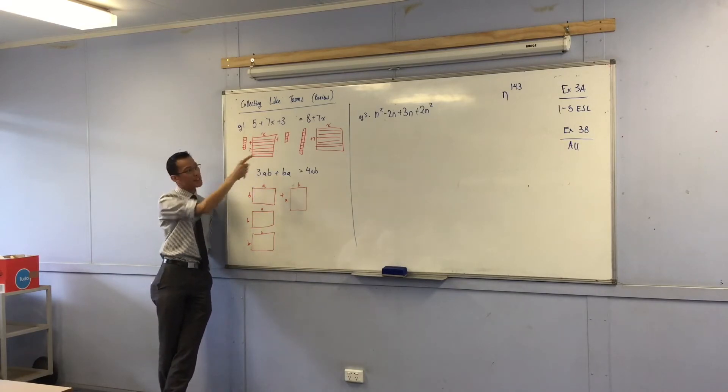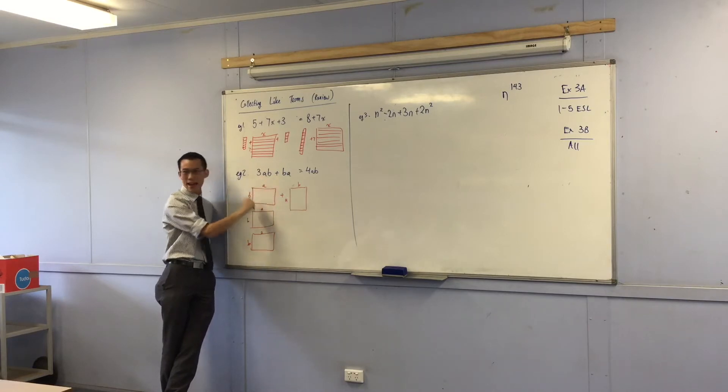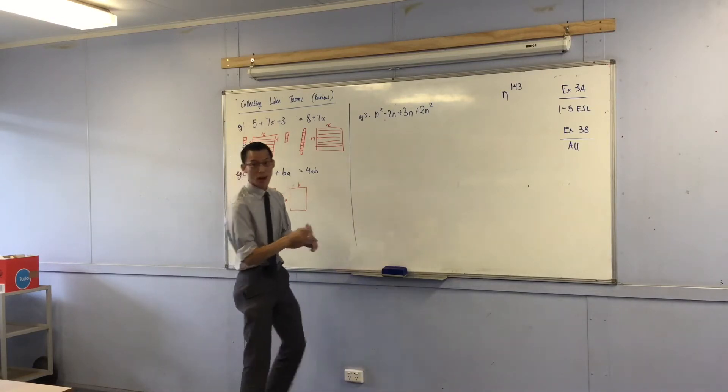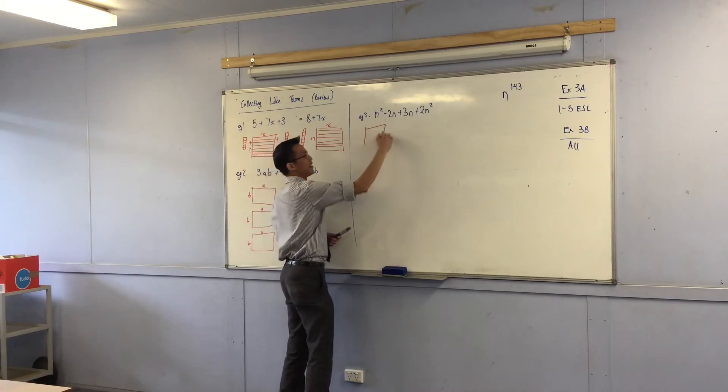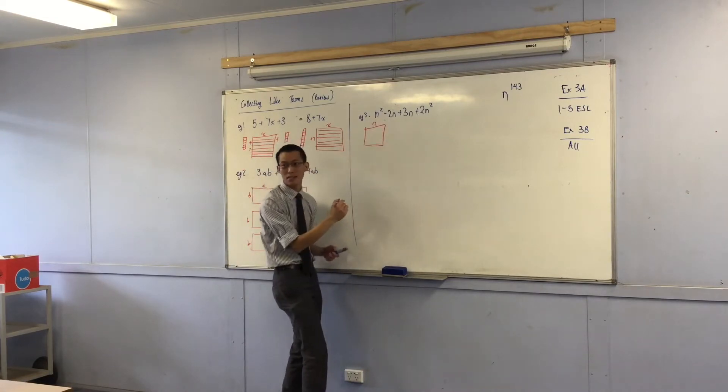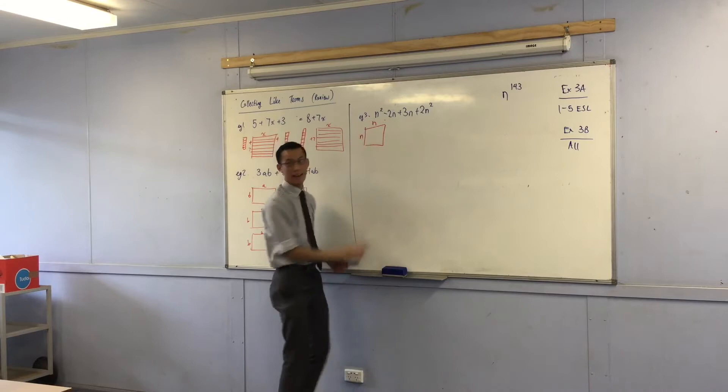Now why do you think we do that? It's because of this, right. Remember how I represented a×b as a that way and b this way? Well, surprise surprise, n squared is n this way and n this way. That's why we call it n squared because it's a square.